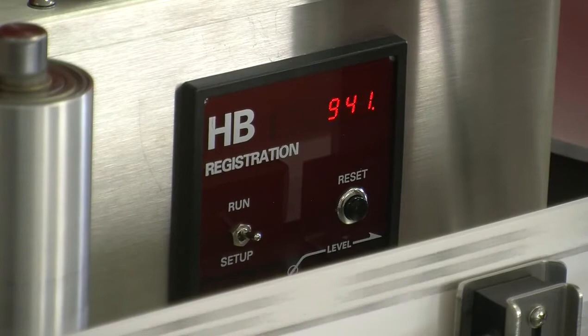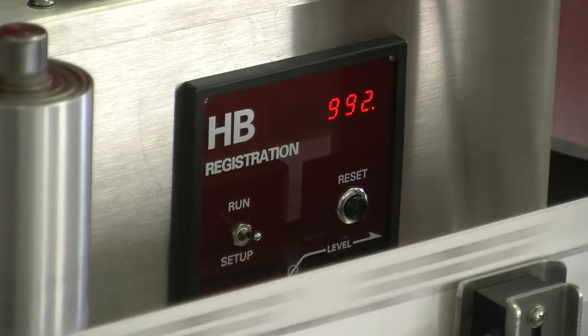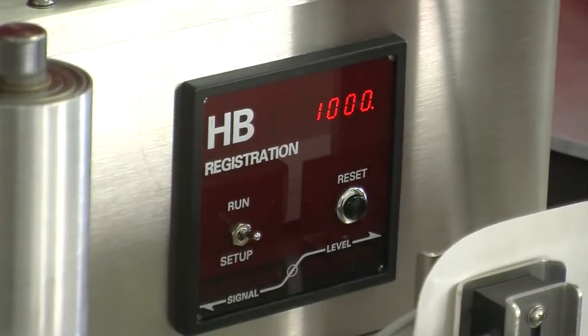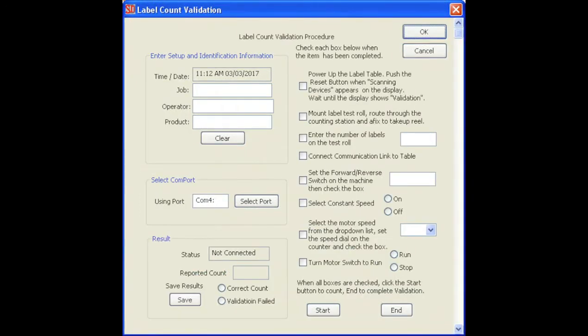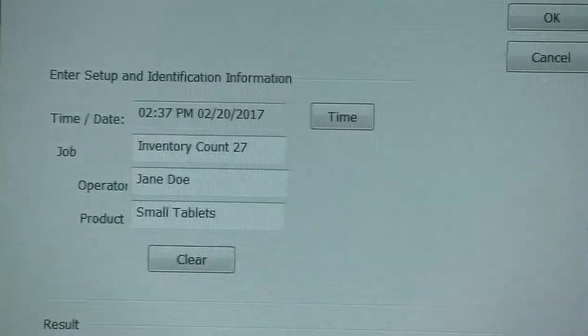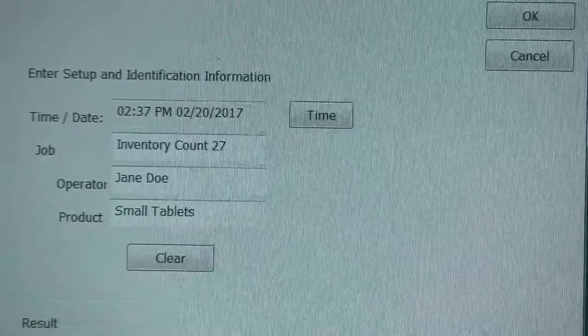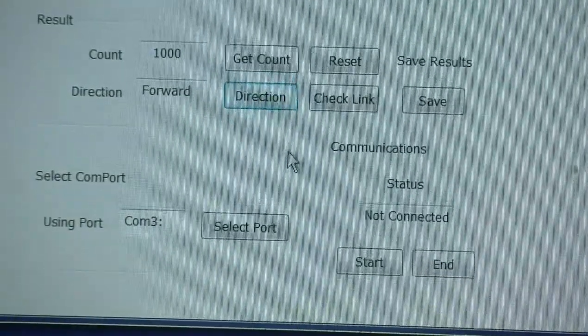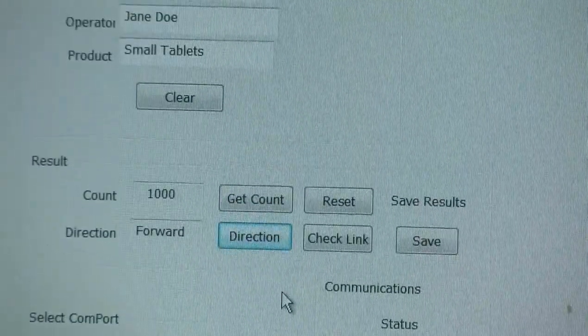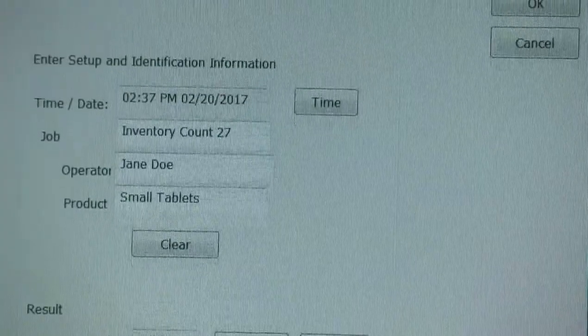For pharmaceutical and nutraceutical packaging companies, we have both reporting and validation software packages available. The reporting software takes the data from each counted roll and allows the operator to document the job, operator information, label part number information, final counts, identified errors, and other critical information. Our validation software package provides a structured, step-by-step, computer-controlled approach to validating the accuracy of the machine itself, and then allows for the documenting of that validation session.